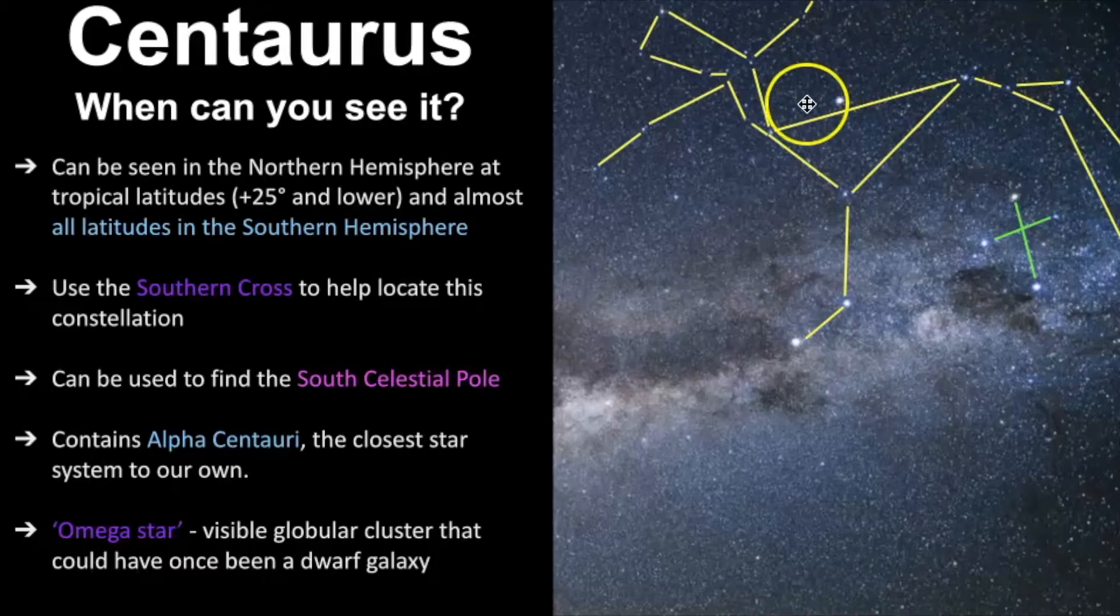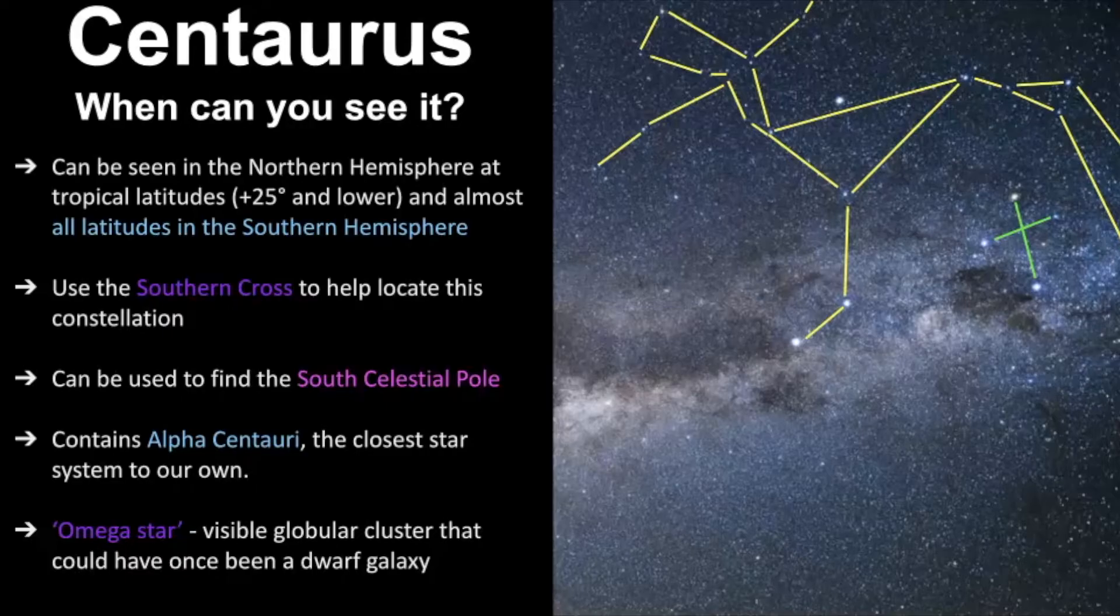Also there is a visible star cluster. It's called the Omega star, and this is a globular cluster that is thought to once been a dwarf galaxy. So it's really cool to look at this. It looks like a star, but it's a star cluster.